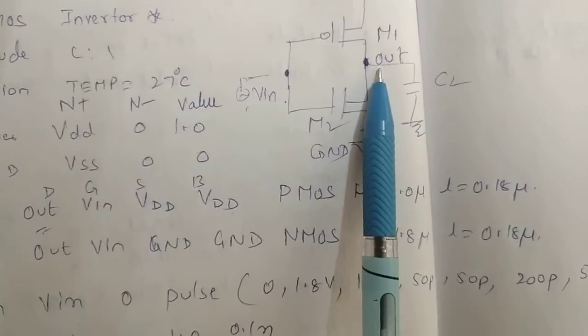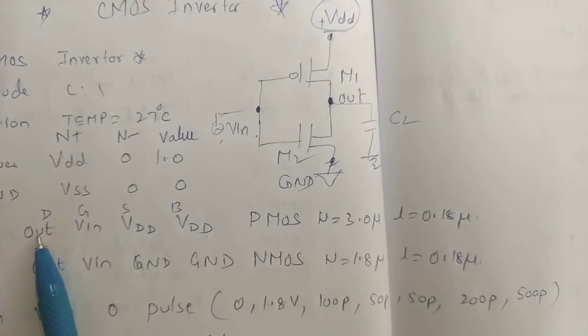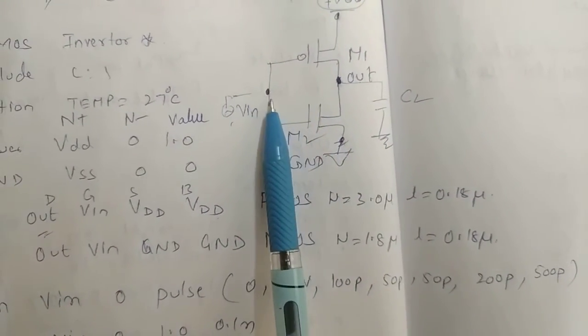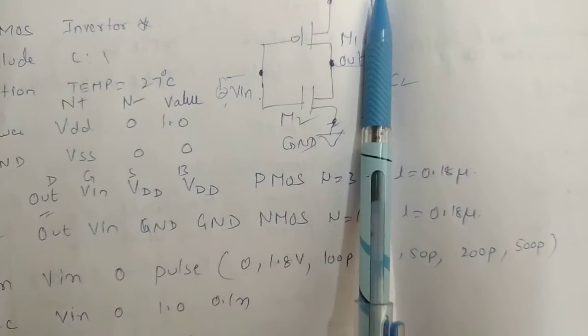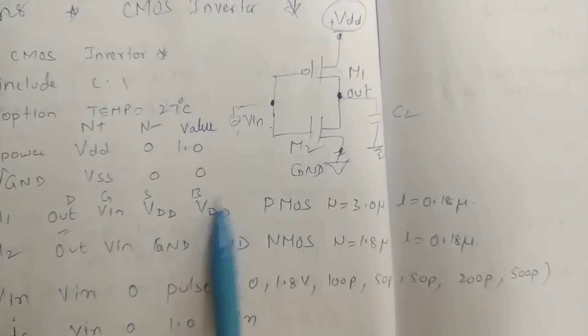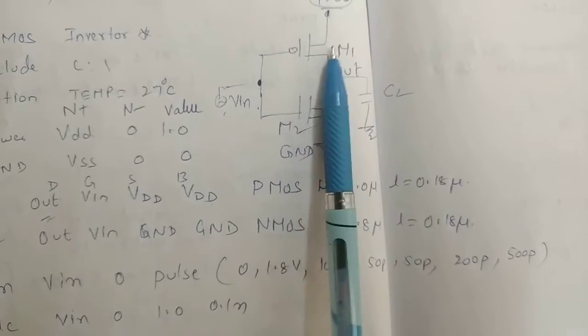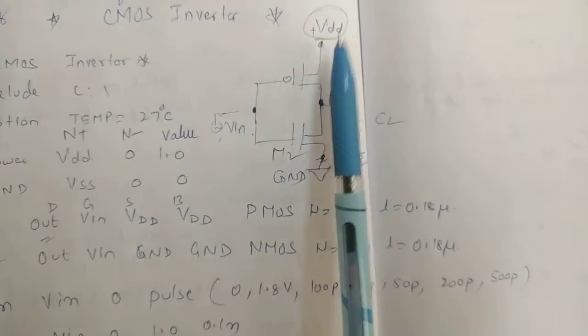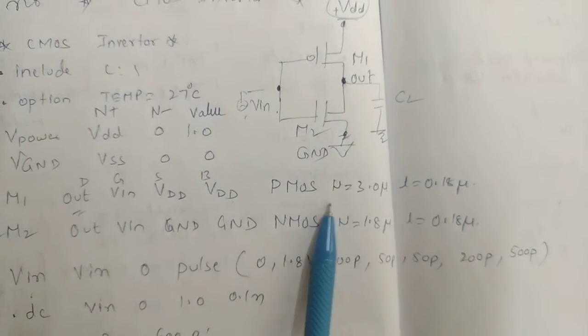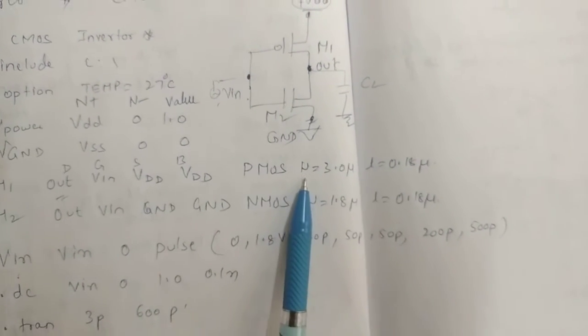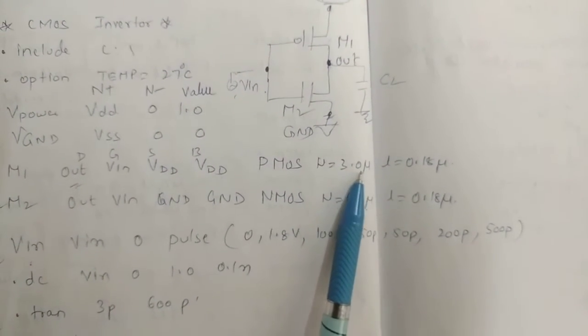First one is PMOS. This is your PMOS, this is your drain terminal. Drain is connected to output. Gate is connected to VIN. The source is connected to VDD. Bulk of this also is connected to VDD. So we wrote VDD. This is PMOS W and L, so you can mention W equal to 3 micron, L equal to 0.18 micron.